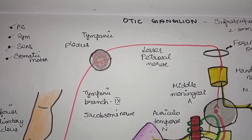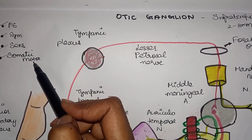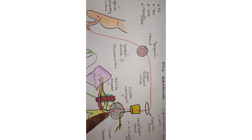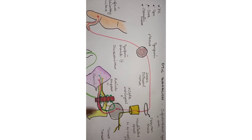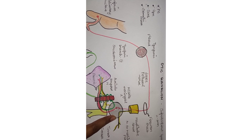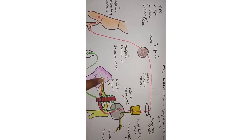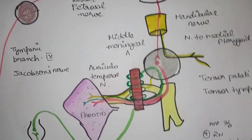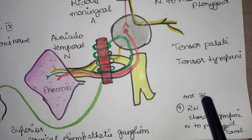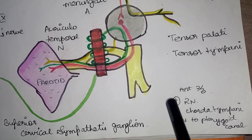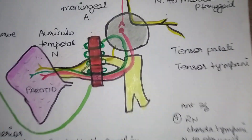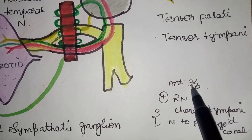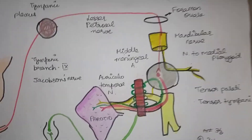So the otic ganglion has four components: parasympathetic, sympathetic, sensory, and somatic motor. The parotid gland receives three types of fibers via the auriculotemporal nerve: parasympathetic fibers relayed in the ganglion, sympathetic fibers passing without relay, and sensory fibers. A special feature of the otic ganglion is its role in taste sensation of the anterior two-thirds of the tongue, combining the chorda tympani nerve and the nerve of the pterygoid canal.